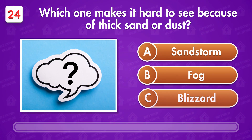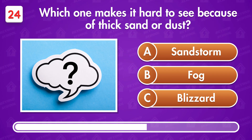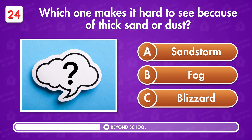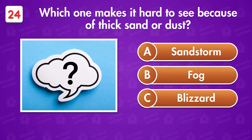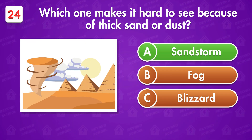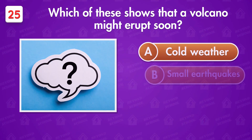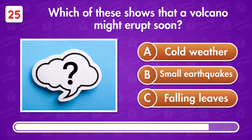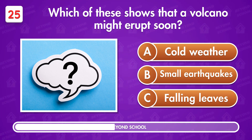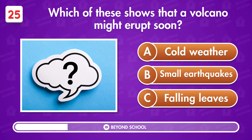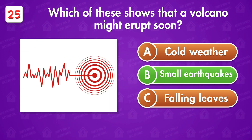Which one makes it hard to see because of thick sand or dust? This is a sandstorm. Which of these shows that a volcano might erupt soon? Small earthquakes.